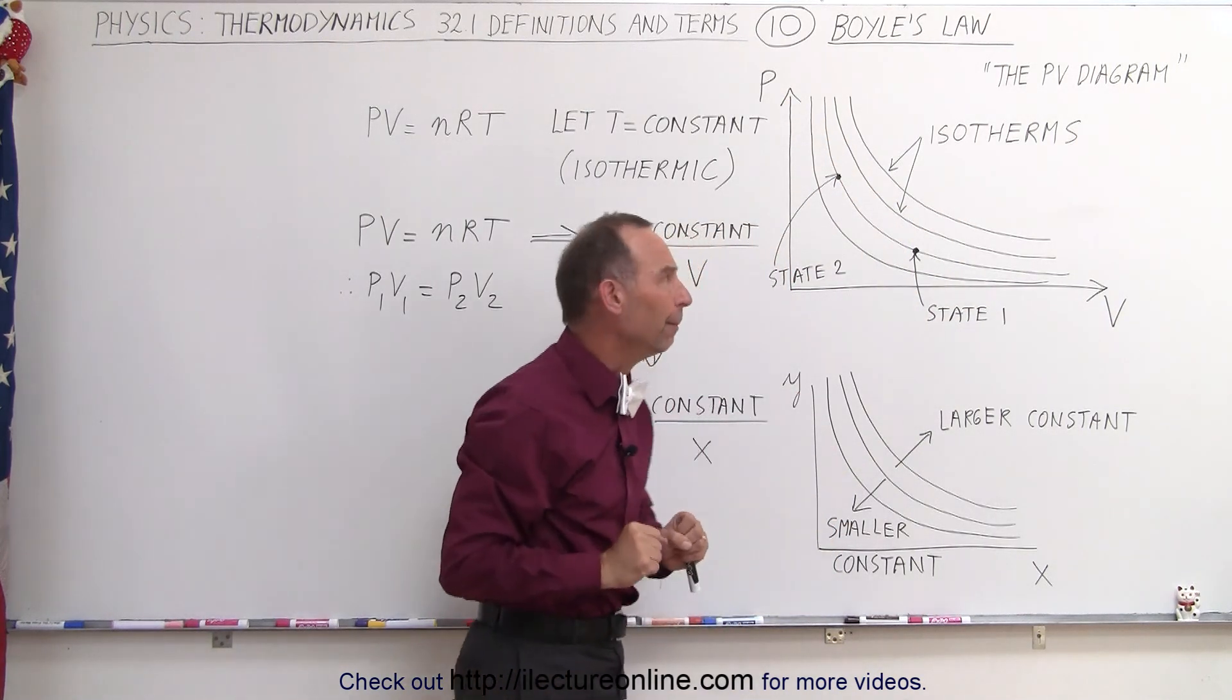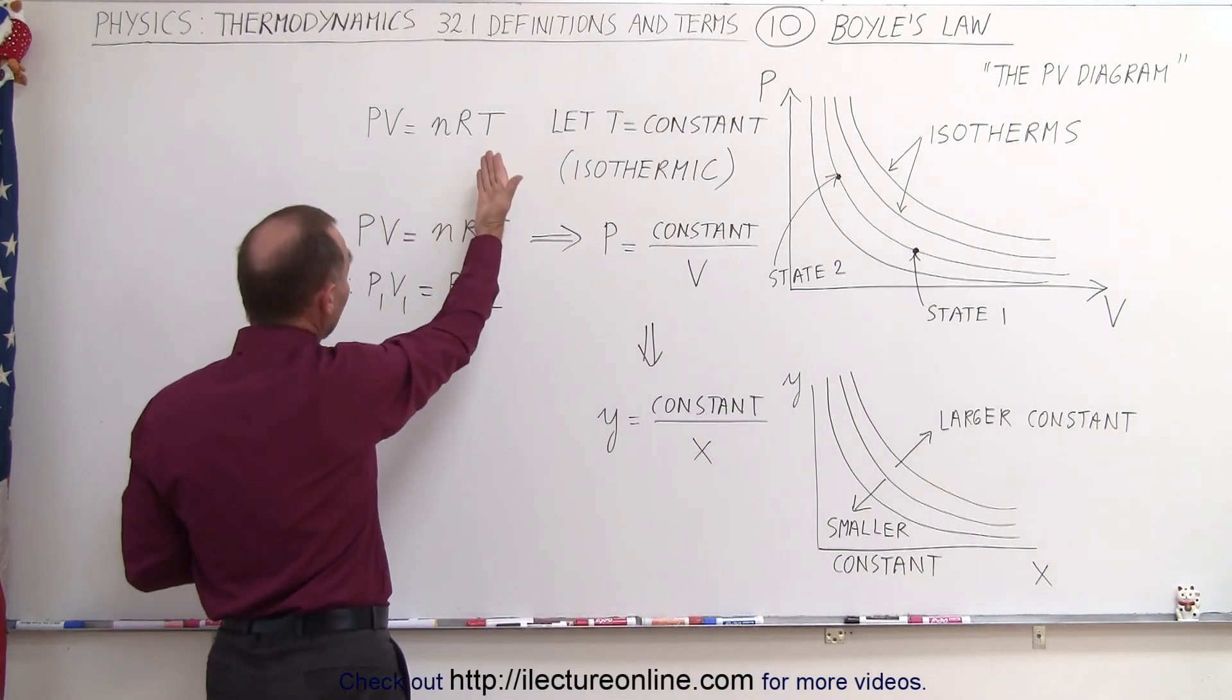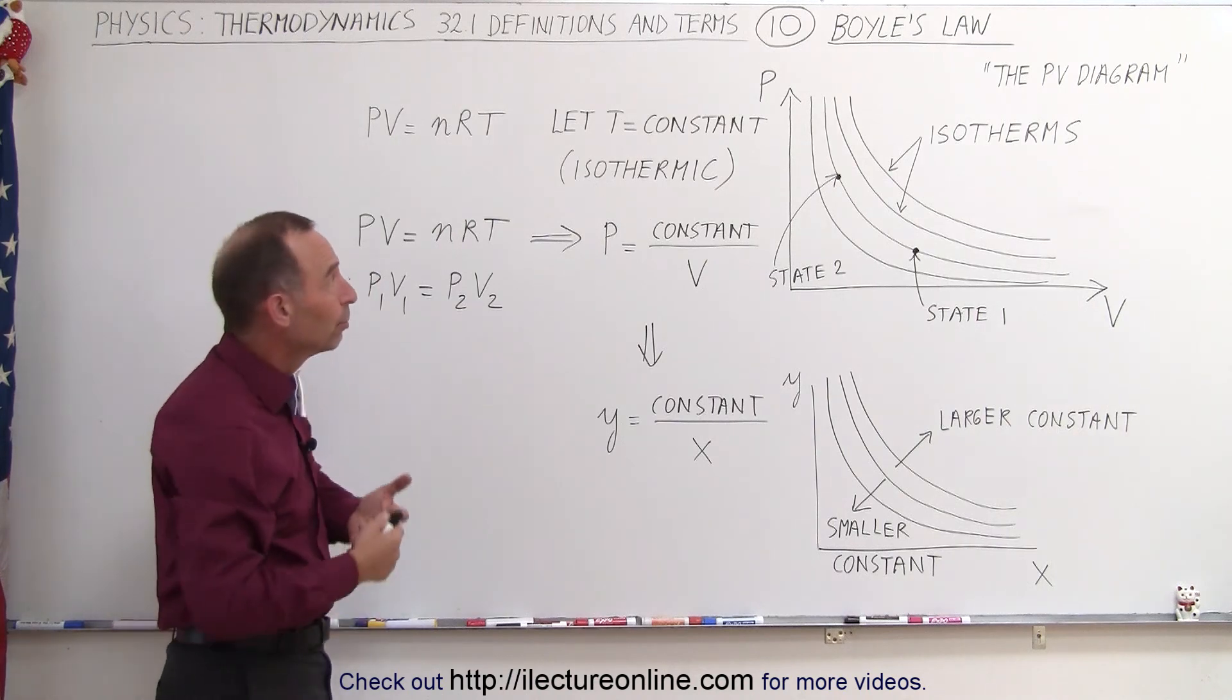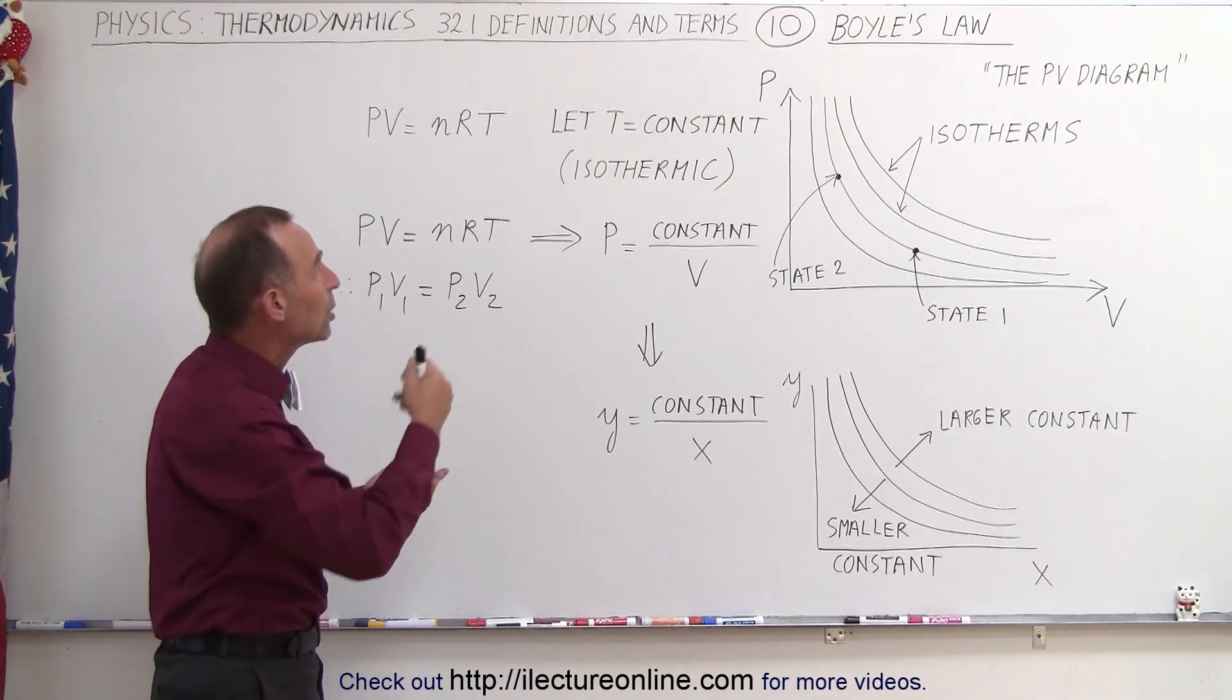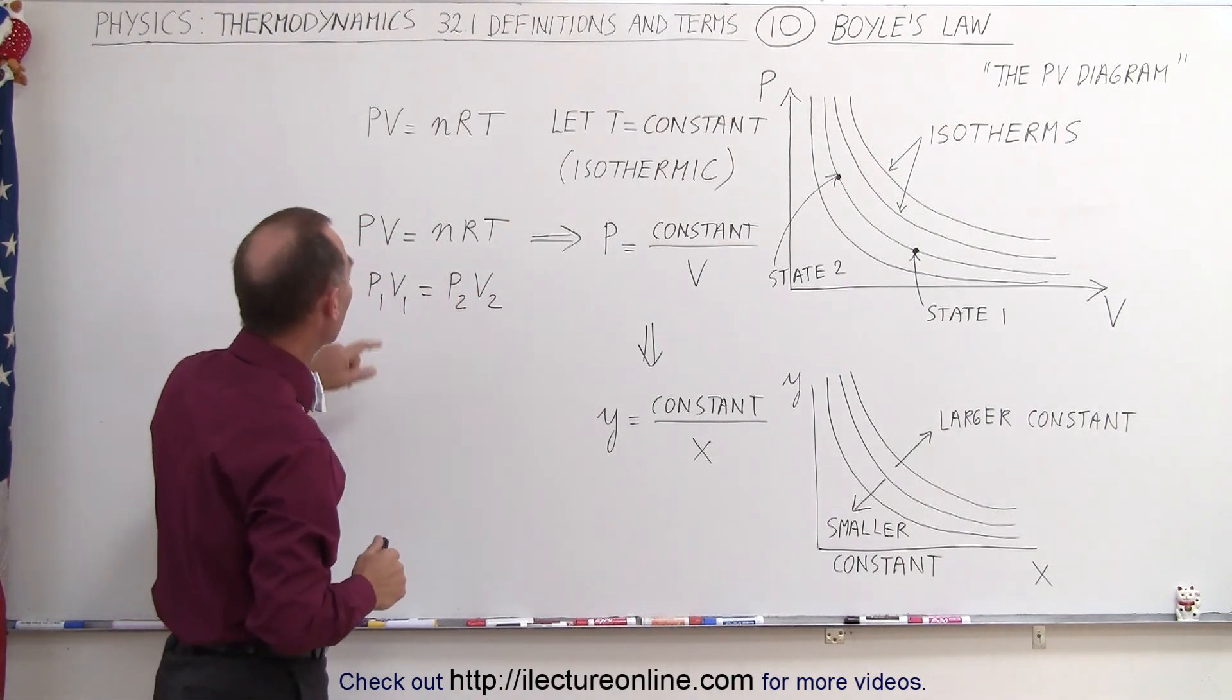Well, where did that come from? Let's go back over here and look at our gas equation, the ideal gas equation PV = nRT. And of course with Boyle's law we let T equal constant, so therefore the process is isothermic, which means that we can write PV = nRT as P is equal to a constant divided by V.